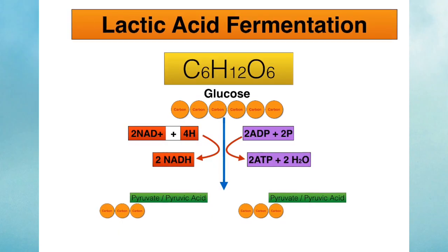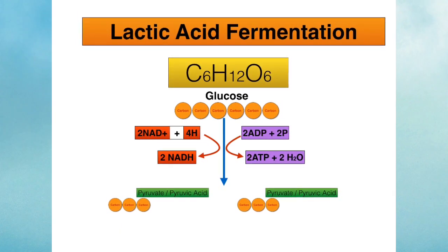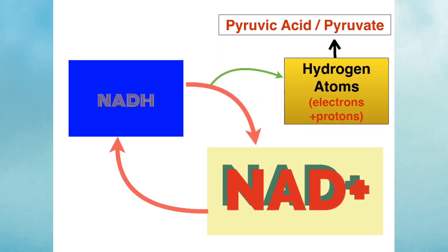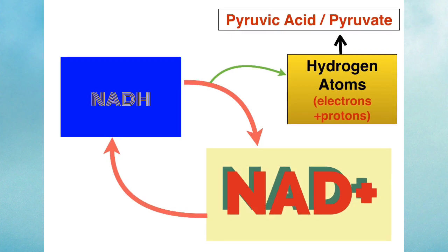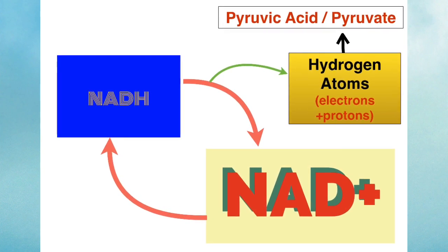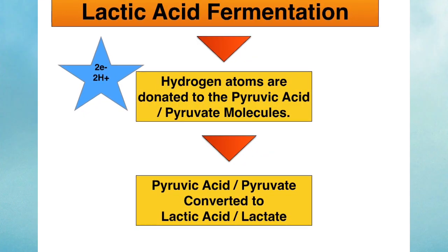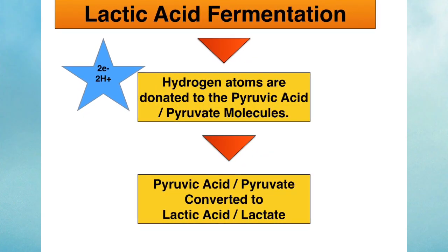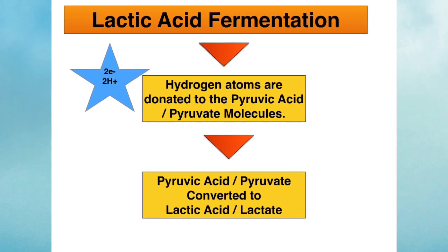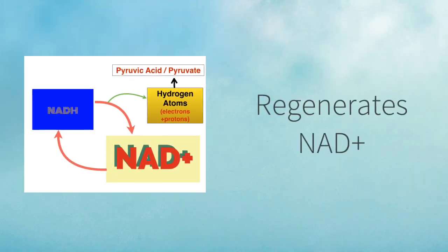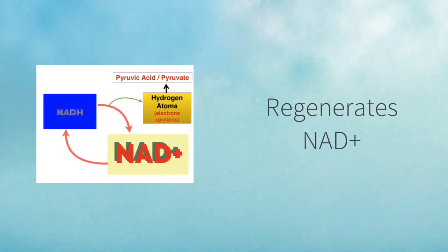So let's go through lactic acid fermentation. Glycolysis takes place as normal and you end up with two pyruvic acids or two pyruvates. Those NADH molecules transfer the hydrogen atoms — which contain those very important electrons — to those pyruvic acid molecules, and in so doing regenerate NAD+. This transfer of hydrogen atoms, including the protons, converts the pyruvic acid molecules into lactic acid molecules, and regenerates NAD+ ready to trap and transfer more electrons and protons.